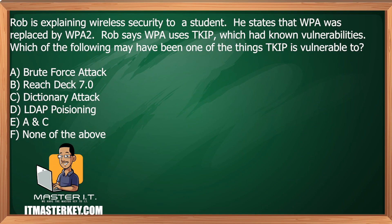Rob is explaining wireless security to a student. He states that WPA was replaced by WPA2, and that WPA uses TKIP, which he claims had no vulnerabilities. Which of the following may have been one of the things TKIP is actually vulnerable to?